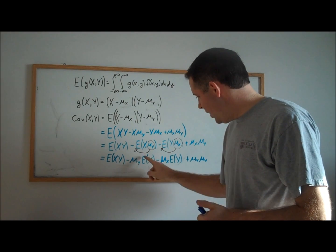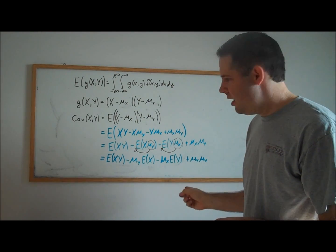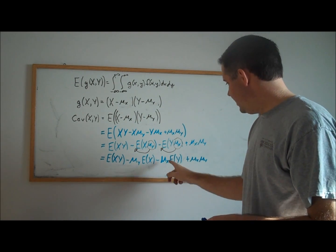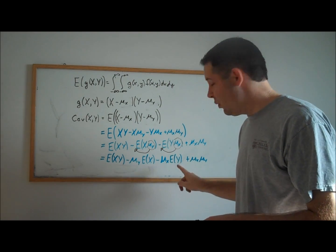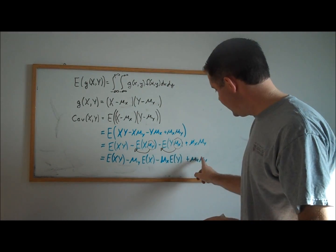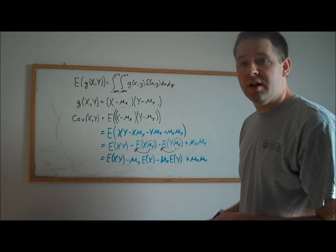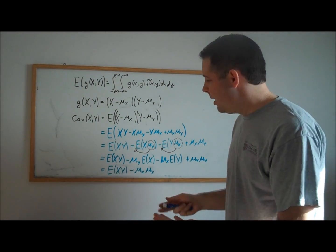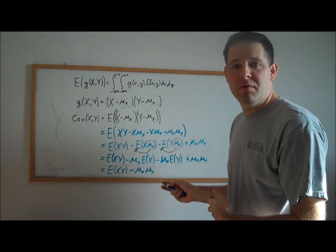We have mu_X here and mu_Y here. This term is minus mu_X times mu_Y, this term is minus mu_X times mu_Y, and this is plus mu_X times mu_Y. One of these cancels with the positive, and we're left with one negative mu_X times mu_Y. There we have the computational form for covariance.